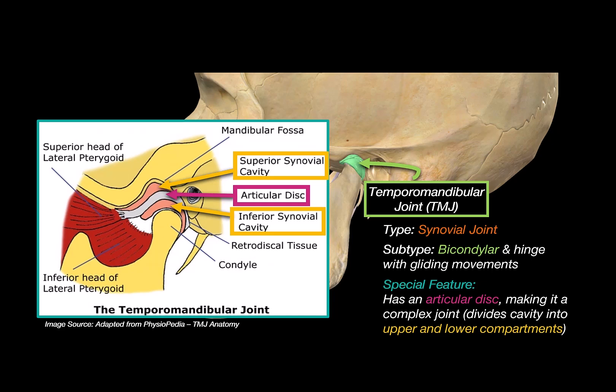Each compartment allows different types of movement. The lower compartment allows for hinge-like rotation, like opening and closing the mouth, while the upper compartment allows for sliding movement, like when you slide your jaw forward or side to side.